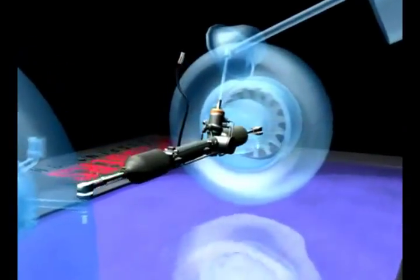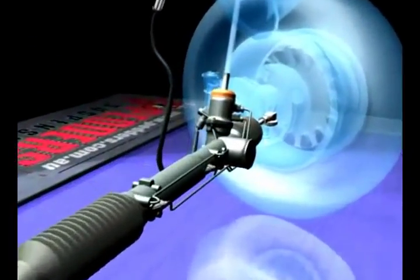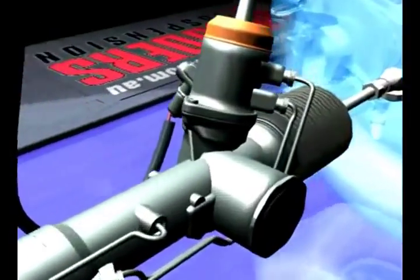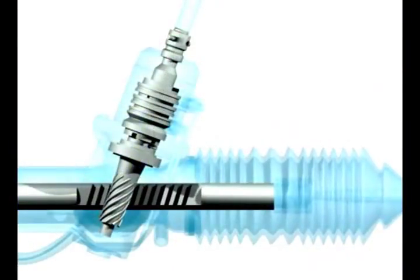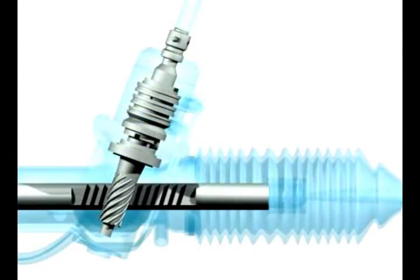The pinion assembly is an integral part of most steering gears. The heart is the torsion bar, a thin steel bar connecting the driver to the wheels.